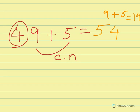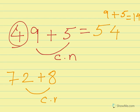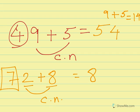Another example: 72 plus 8. Here, 2 plus 8 is a carrying number, so 7 will increase by 1 to become 8. The n number of 2 plus 8 is 0, as 2 plus 8 is 10. So our answer is 80.